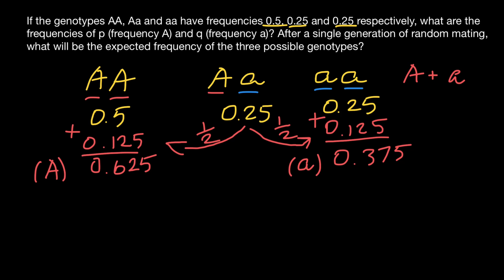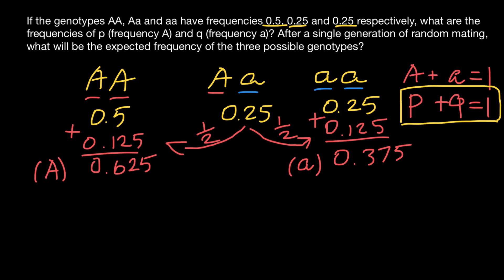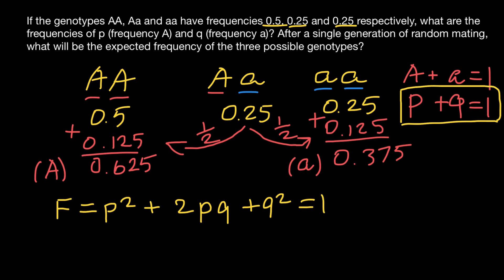We have found the frequency of the dominant allele A and recessive allele A. If we add all the dominant alleles and recessive alleles, we should get 1. In the Hardy-Weinberg formula, P stands for the dominant allele A and Q stands for the recessive allele A. According to the Hardy-Weinberg formula, the frequency of the three genotypes equals P squared plus 2PQ plus Q squared, and all this equals 1. P squared is the homozygous dominant genotype, 2PQ is the heterozygous genotype, and Q squared is the homozygous recessive genotype.